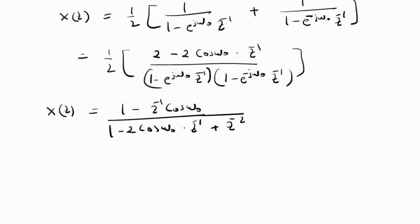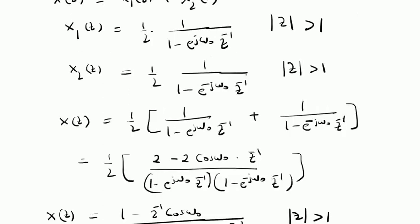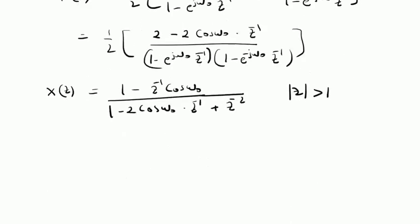Therefore, the overall Z-transform is X(z) = (1 - z^(-1) cos(omega naught)) / (1 - 2 cos(omega naught) z^(-1) + z^(-2)), and the ROC is |z| > 1, because both X1(z) and X2(z) have ROC |z| > 1. Since they are identical, the overall ROC is the same — the region outside the circle of radius 1.